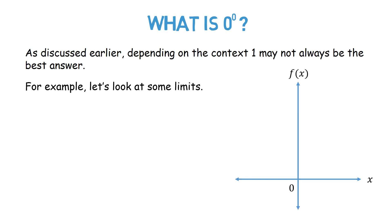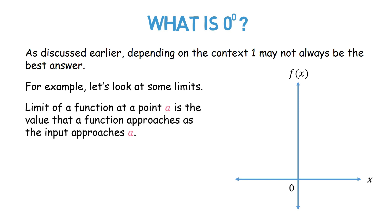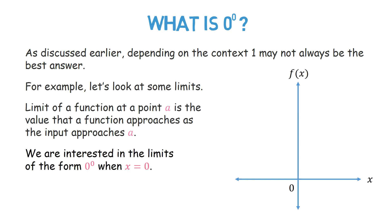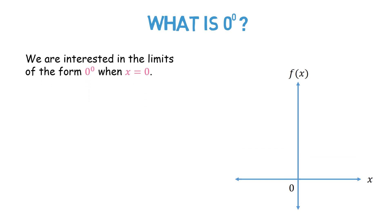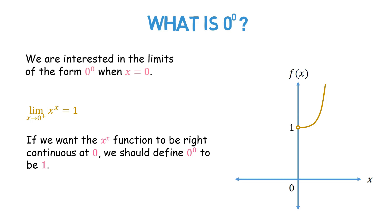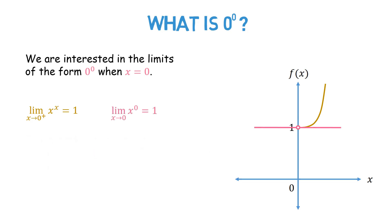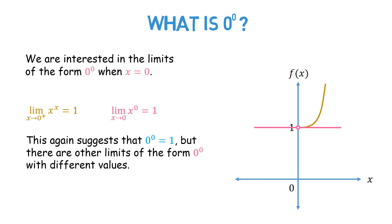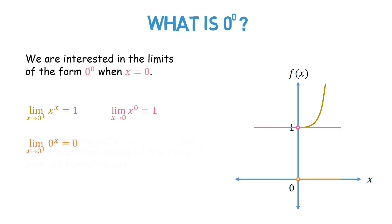For example, let's look at some limits. The limit of a function at a point A is the value that a function approaches as the input approaches A. We are interested in limits of the form 0 raised to 0 when x equals 0. The limit of x raised to x as x approaches 0 from the right is 1, implying that if we want x raised to x to be right continuous at 0, we should define 0 raised to the power of 0 to be 1. The limit of x raised to 0 as x approaches 0 is also 1, again suggesting that 0 raised to 0 is 1.